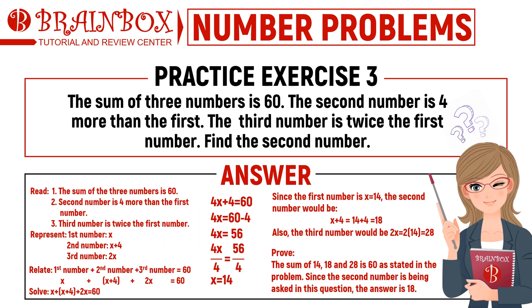Time is up. The second number is 18. From this problem we can say three things: first, the sum of the three numbers is 60; second, the second number is four more than the first number; and third, the third number is twice the first number.